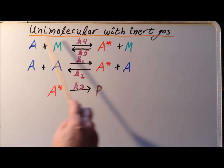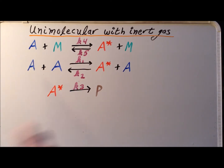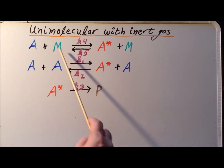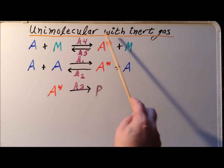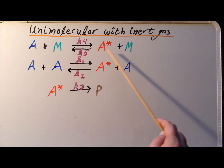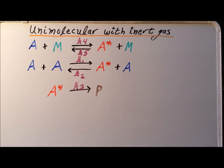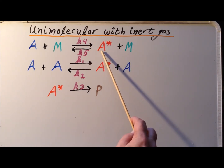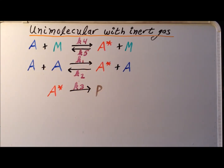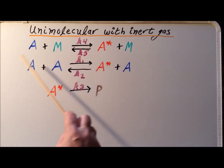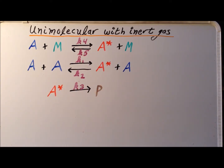A new wrinkle is this step written on top, where the reactive molecule A will collide with a molecule of inert gas, shown here as a green M. In the process, it converts A into the activated complex, red A star, and leaves the inert gas as it was before. The forward reaction occurs with a rate constant of K4, and the collisional deactivation of the reactive complex with the inert gas has a rate constant of K5.